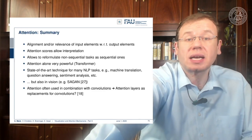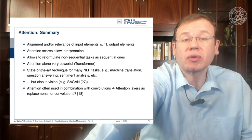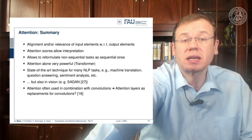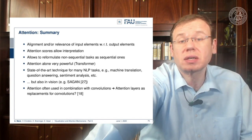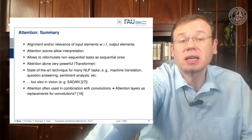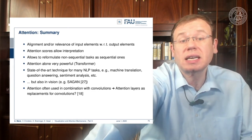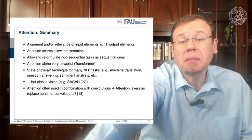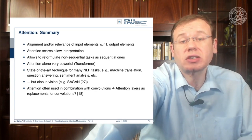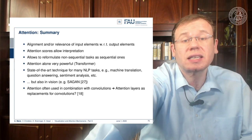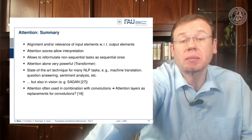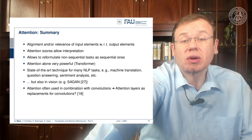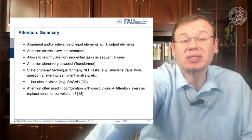To summarize attention: it is based on the idea of aligning or finding the relevance of input elements with respect to specific output elements. The attention scores allow interpretation. It allows reformulating non-sequential tasks as sequential ones, and attention alone is very powerful as a transformer mechanism. State-of-the-art techniques for many natural language processing tasks involve attention mechanisms — very popular for machine translation, question answering, and sentiment analysis. It has also been applied in vision, and there is the question of whether attention layers can also serve as replacements for convolutions.